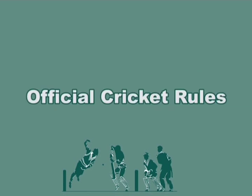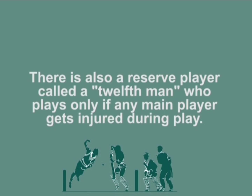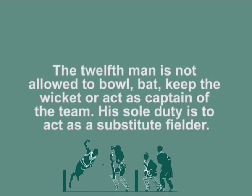Cricket is a game played between two teams made up of 11 players each. There is a reserve player called the 12th man who plays only if any main player gets injured during the play. The 12th man is not allowed to bowl, bat, keep the wicket, or act as captain of the team. His sole duty is to act as a substitute fielder. The original player is free to return to the game as soon as he recovers from the injury.